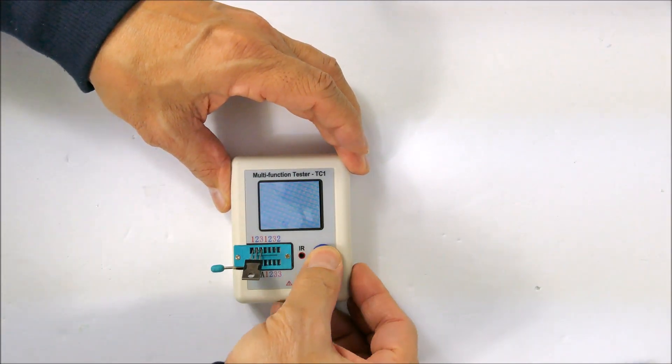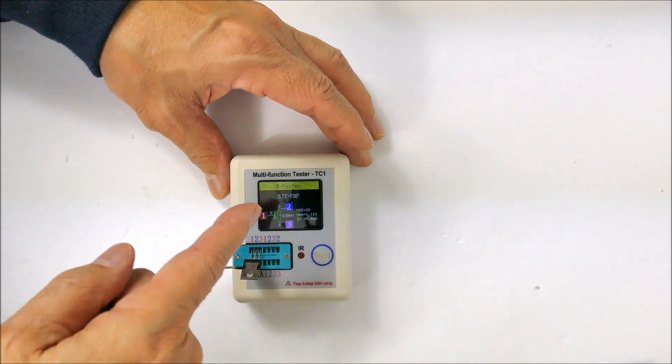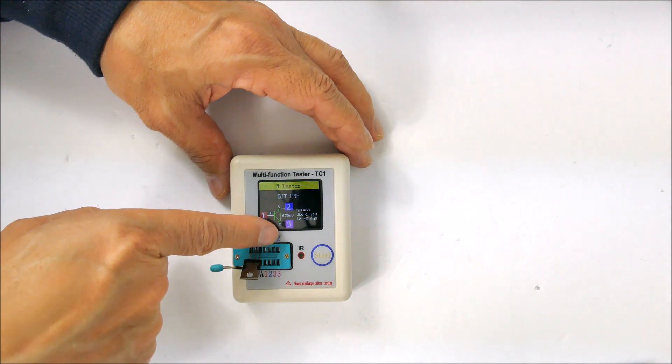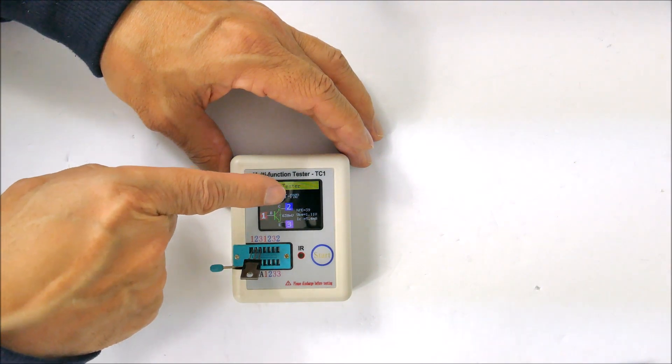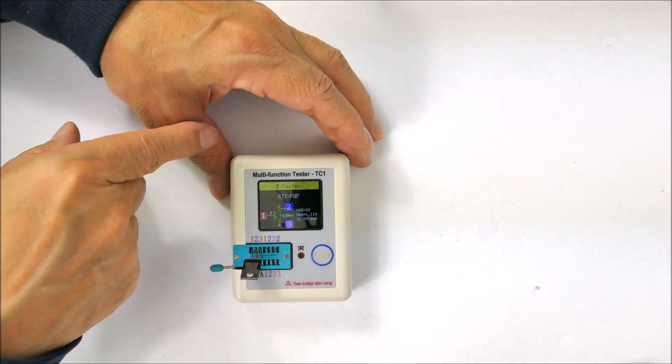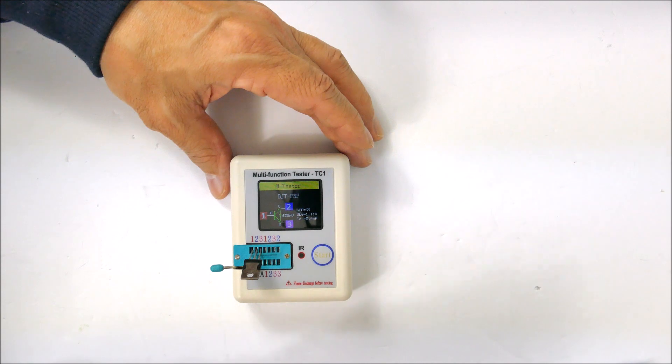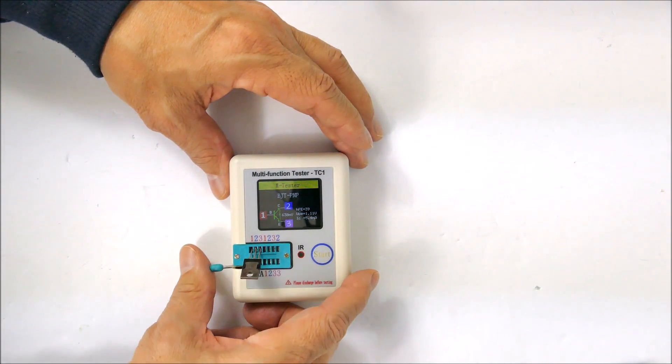For example, if I flip this transistor around and stick it in there, it still figures it out and just tells you which pin was connected to the emitter, base, and collector. So it doesn't matter which way you put it in, it will figure out which pin is which on a transistor.